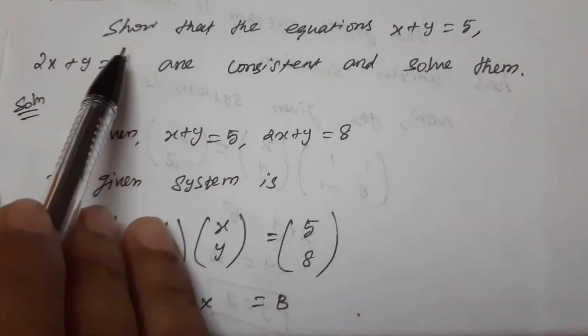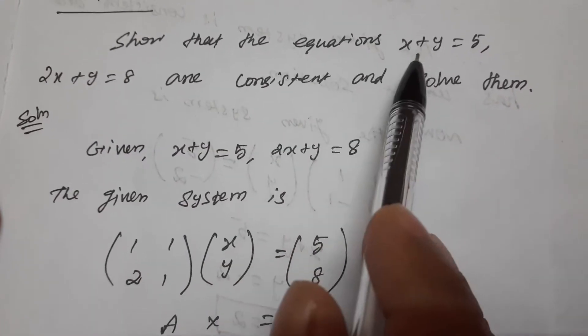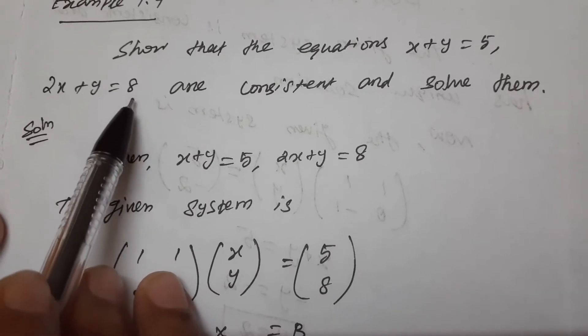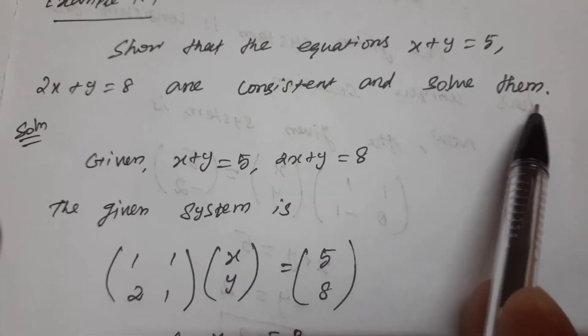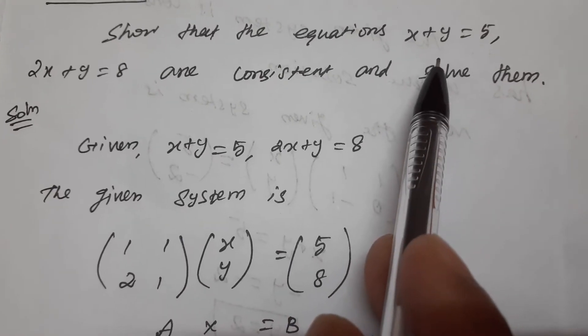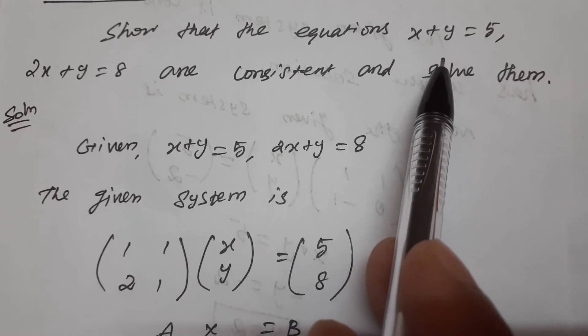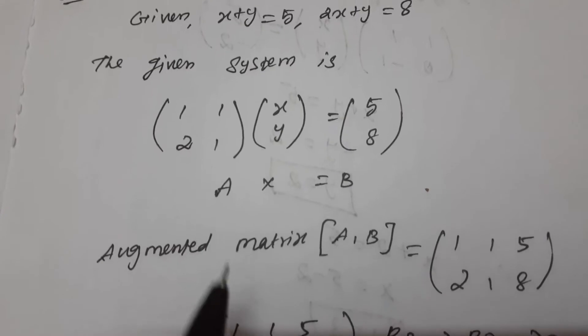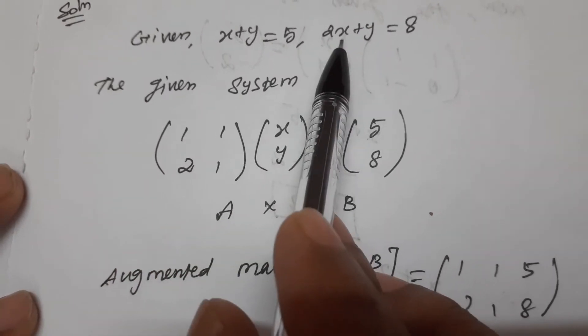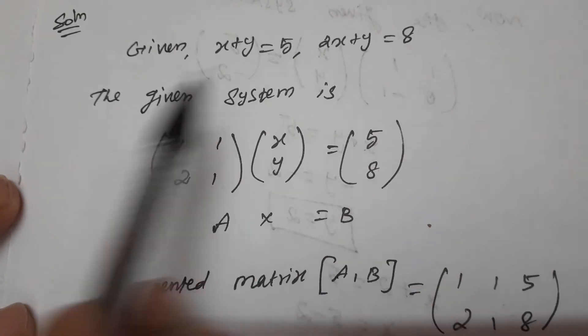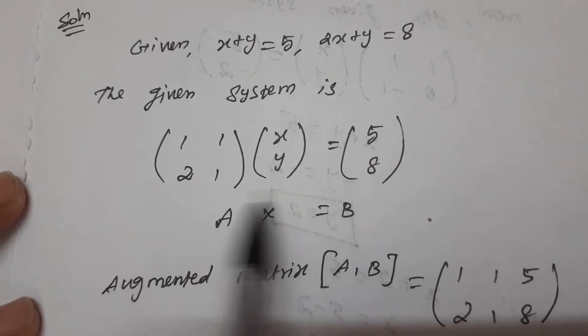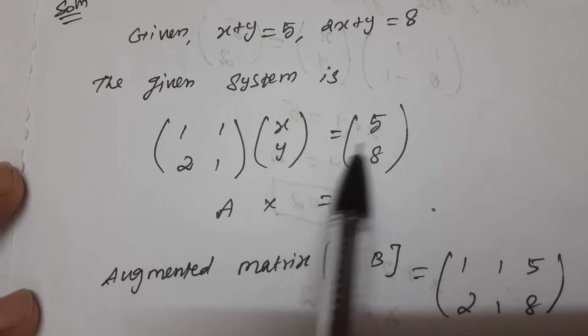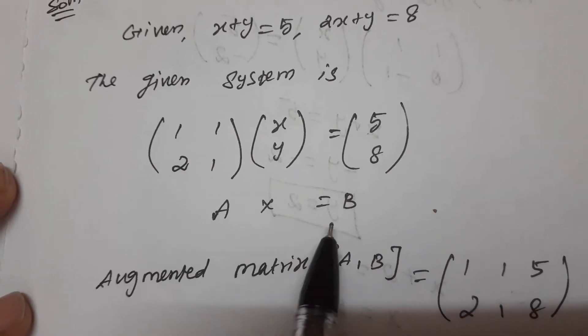Students, show that the equations x + y = 5 and 2x + y = 8 are consistent and solve them. Two equations are given and we need to check if the equations are consistent first, then solve them. The given system in matrix form is: 1 1, 2 1 times x y equals 5 8. AX = B.